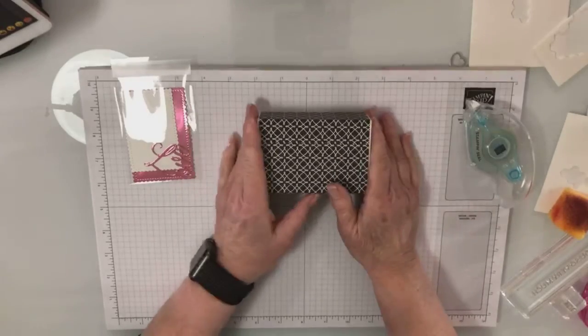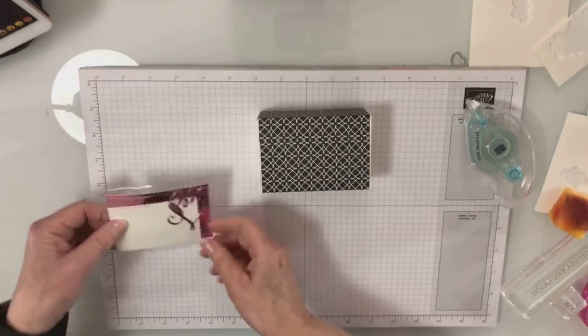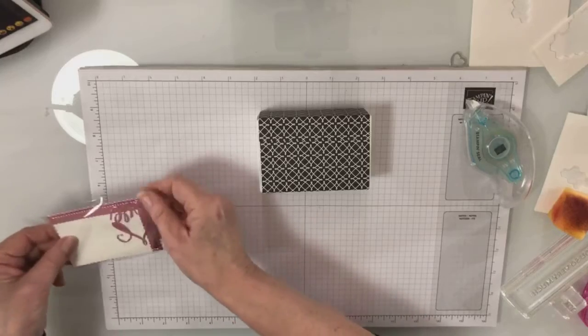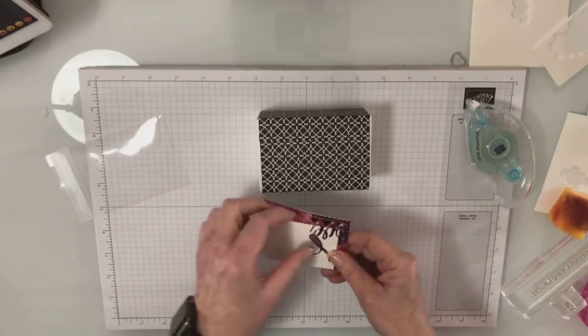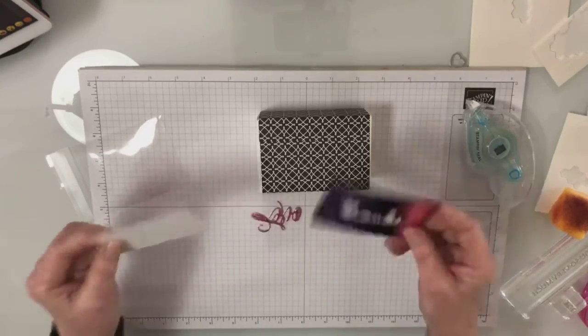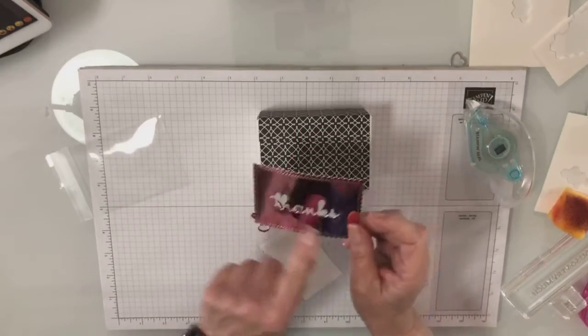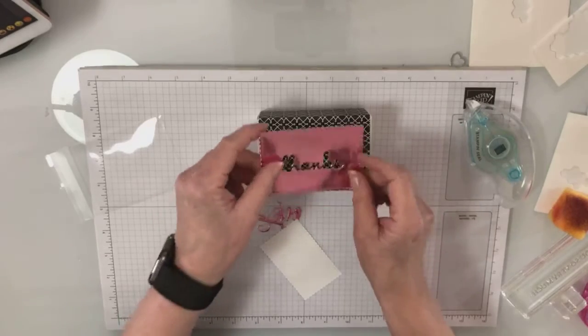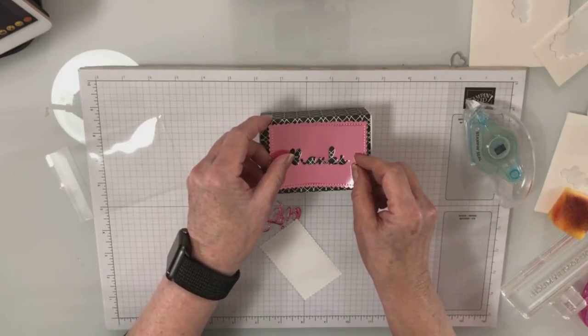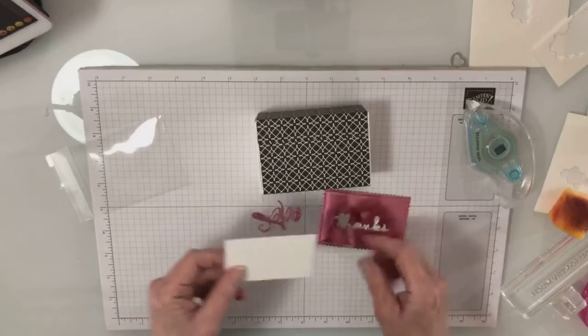In your box, in your packet, you will have two pieces that are cut from the Stitch So Sweetly dies. This one I cut the thanks out of for another card, one of your other cards, but we're going to use that one and we're going to use this one.